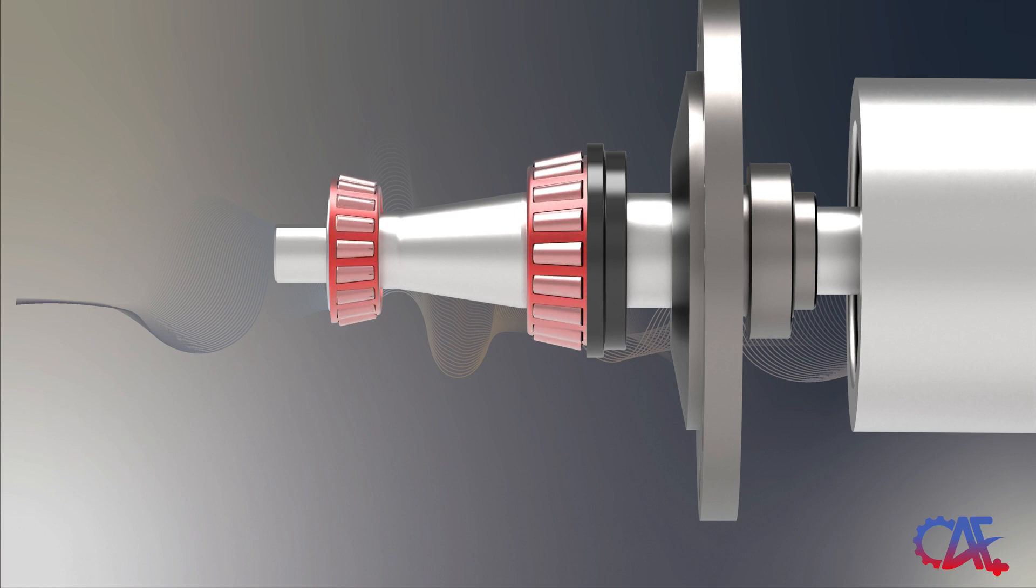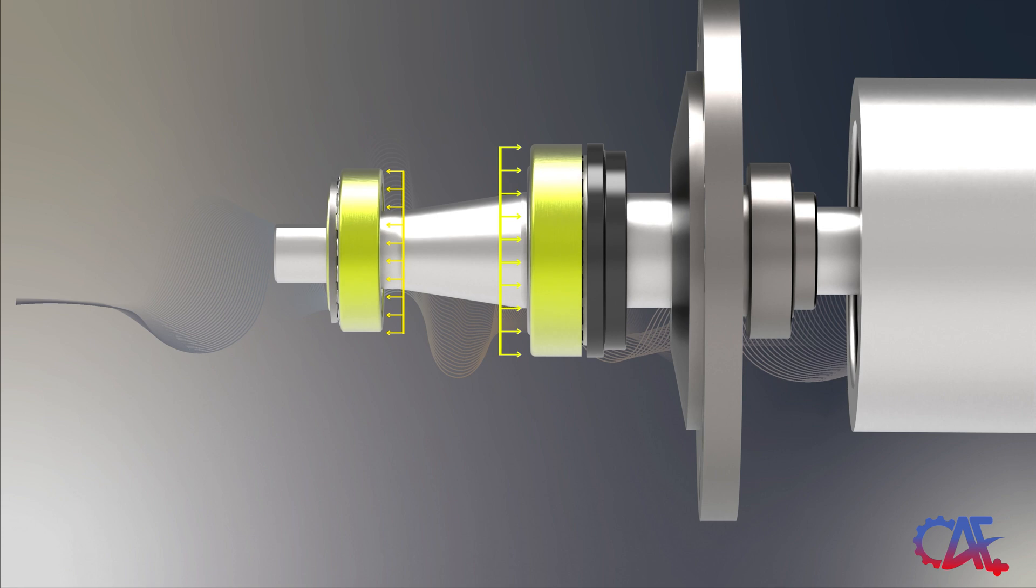When subjected to significant radial loads and unidirectional axial loads, the most appropriate choice is tapered roller bearings. As shown by the yellow arrows, the axial load will be managed by the tapered roller bearing as such.